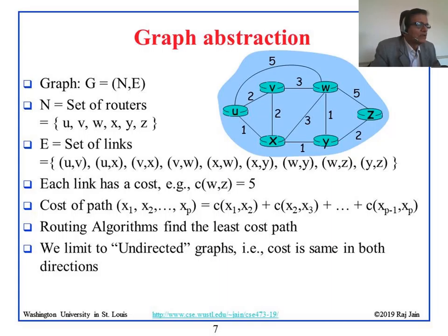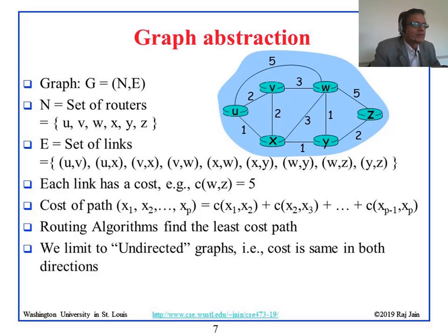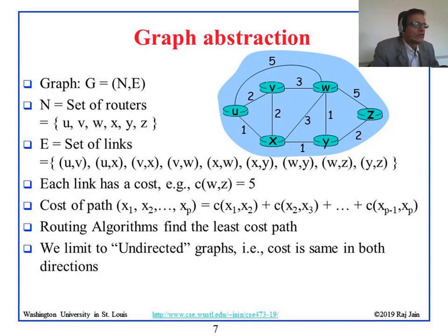The routing algorithm's job is to find the least cost path — the path with the lowest cost. In a simple graph you can look and see the least cost path, but the internet is millions of times bigger, so you need an algorithm. The graph here has no arrows, meaning the cost of going from U to V is 2 and from V to U is also 2 — they are bidirectional. In some cases directions make a difference and you'd need arrows, but we won't discuss that now.